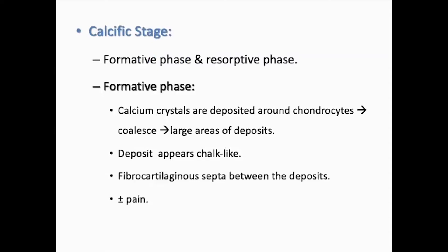The calcific stage passes through two phases. In the formative phase, calcium crystals are deposited around chondrocytes, then fused to form larger deposits which appear chalk-like, with fibrocartilaginous septa in between. This phase can be painful.